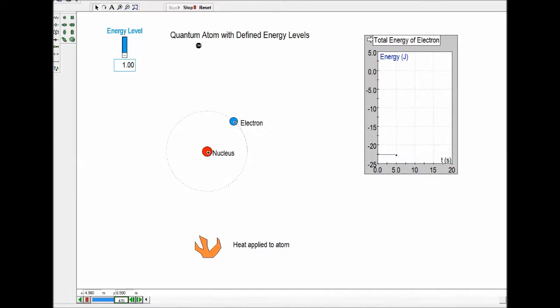Here we're now contrasting the classical atom with a quantum atom. Heat is applied to the atom, but the electron is staying in its same energy level. So you can see a flat line here on the energy graph.